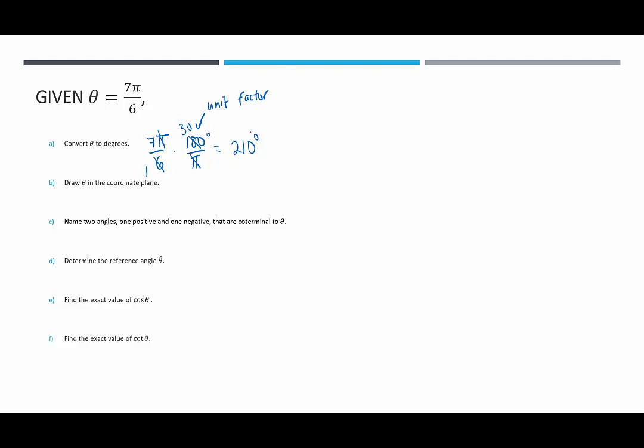Part B is asking us to sketch theta in the coordinate plane. So to do that we're going to set up our y axis and our x axis and we need to figure out where does 7 pi over 6 terminate. So this is 0, this is pi over 2, over here we have pi, down here we have 3 pi over 2. 7 pi over 6 is slightly bigger than 1 pi because 1 pi would be 6 pi over 6, so it's going to terminate in quadrant 3 just past our pi. So there is our angle theta.